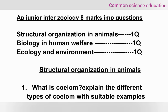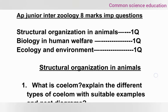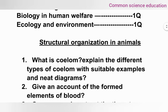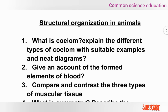For structural organization in animals, the important questions are: What is coelom? Explain the different types of coelom with suitable examples and neat diagrams. Give an account of formed elements of blood. Compare and contrast the three types of muscular tissue. What is symmetry? Describe the different types of symmetry in the animal kingdom with suitable examples.